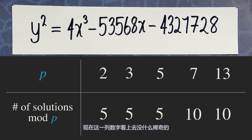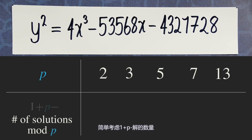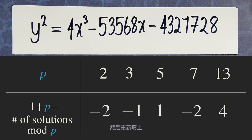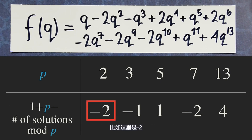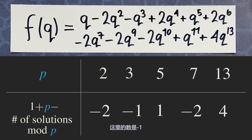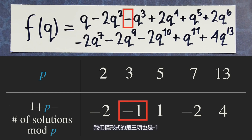This list of numbers doesn't look too interesting at the moment — but here comes the magic. Instead of considering the number of solutions mod p, consider this slightly weirder thing: 1 plus p minus the number of solutions mod p. The point is, these numbers exactly match the coefficients of our modular form. For example, the number here is negative 2, and the second coefficient of our modular form is negative 2. The number here is minus 1, and the third coefficient of the modular form is minus 1. Likewise for all the other numbers.